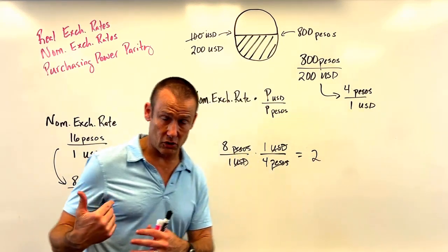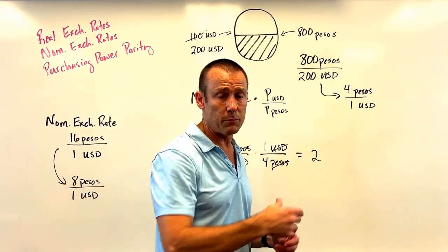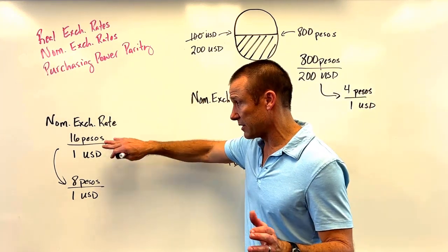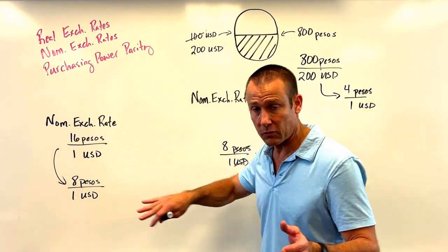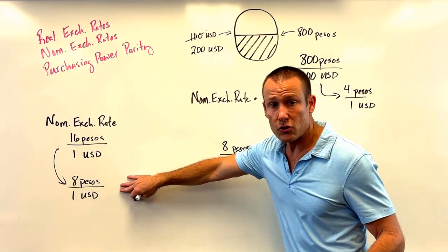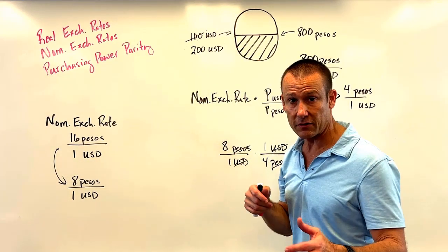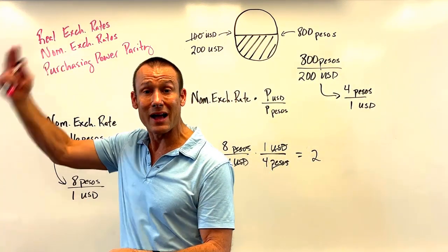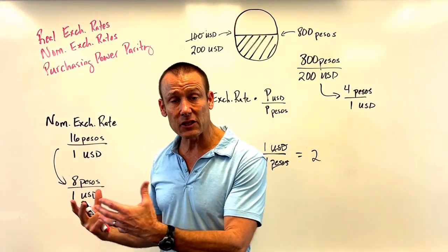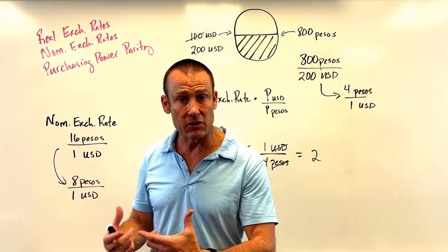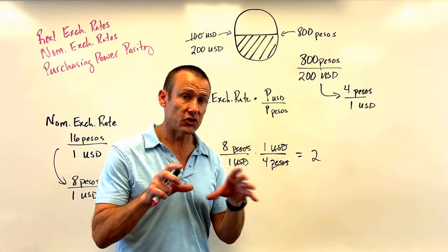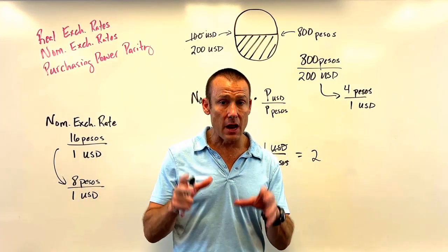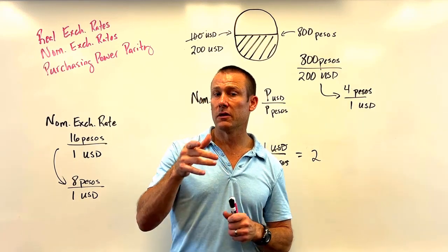Since the real exchange rate stayed at 2, net exports would not change. The American's buying power going into Mexico still doubles — nothing changed. The Mexican's buying power going into the US is still cut in half — they're not going to buy more US goods and services. Key insight: if the real exchange rate doesn't change, net exports don't change.